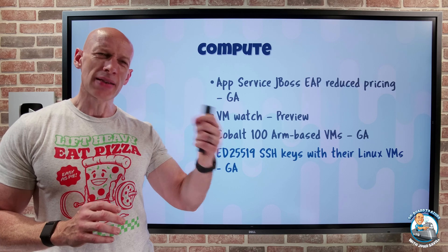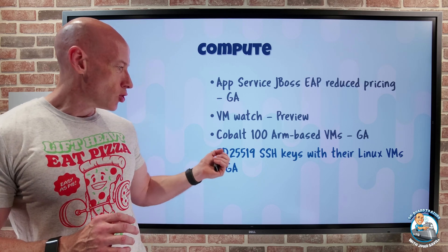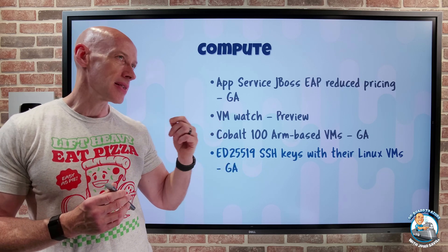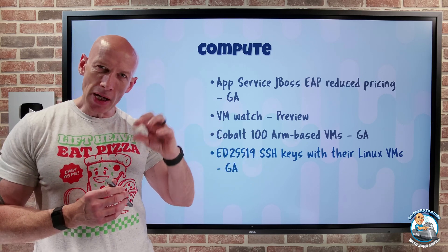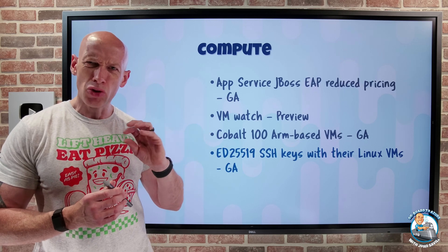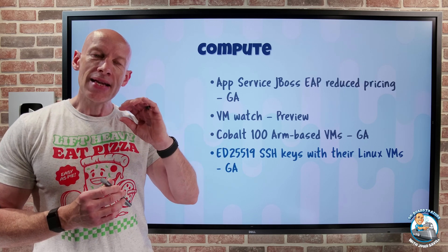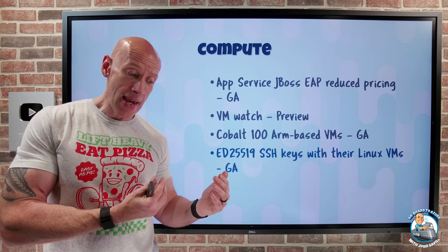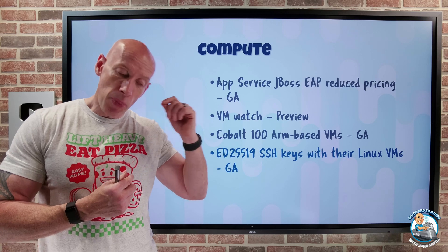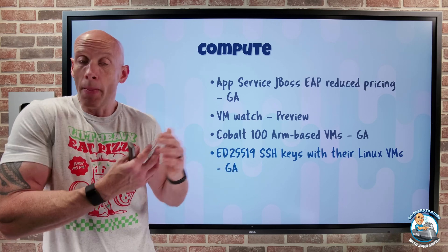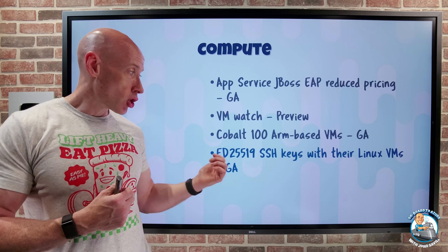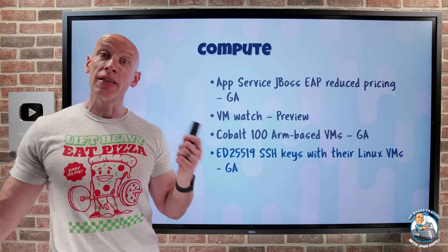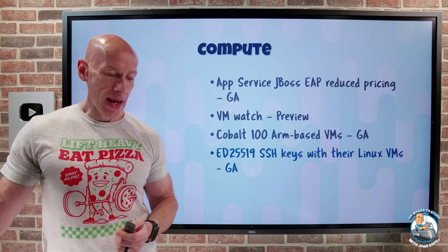ED25519 SSH keys with Linux VMs have now gone GA. The big deal here is that for a much smaller key — 256 bits, for example — it has the same security as a much larger RSA key. The fact that it's a smaller key means it's more performant and uses fewer resources while maintaining the same level of security. You can now create these via the portal, the CLI, or PowerShell. RSA is still the default for now, but you can go ahead and create these.